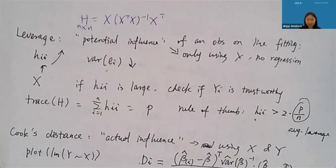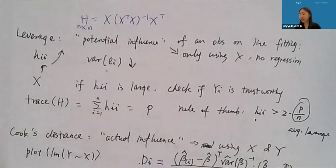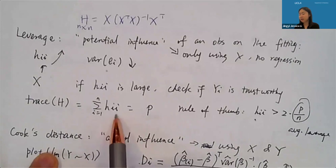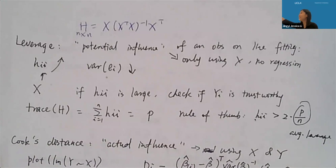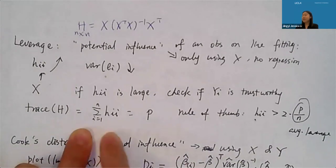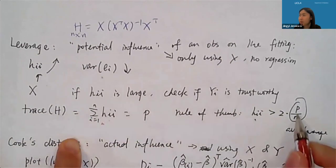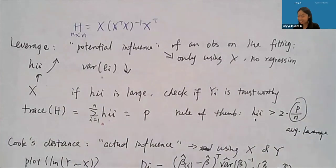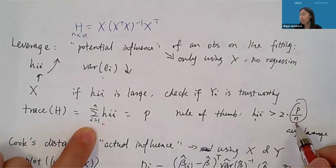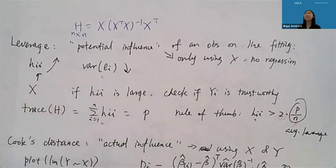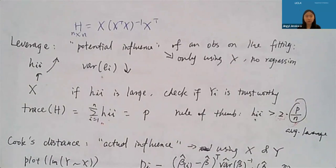To determine whether a leverage H_ii is large enough to be concerned about, we use the trace of H: sum of all H_ii equals trace(H) = p. So the average leverage is p/n. The rule of thumb: if H_ii > 2p/n (twice the average), call it large leverage. The key difference from residuals: leverage doesn't require model fitting — it's purely based on the design matrix.